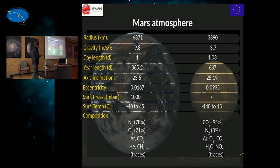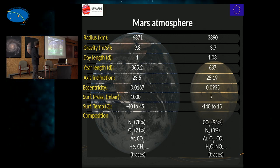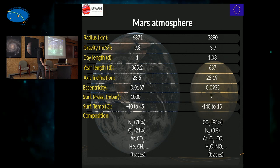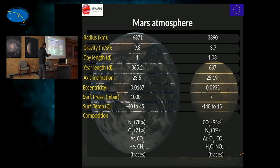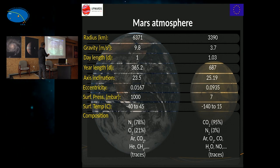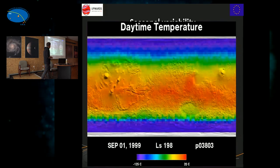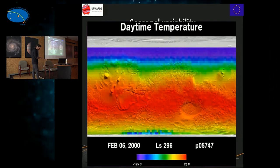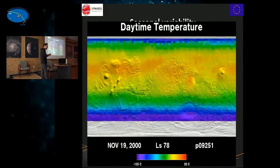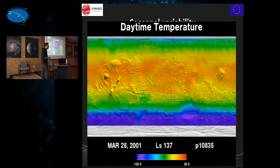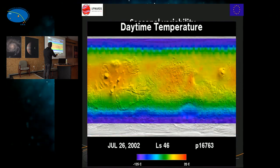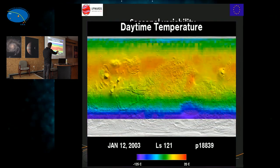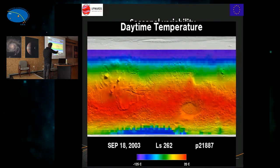Another consequence is that a thin atmosphere has less capacity to redistribute heat, so you have much larger temperature differences on Mars than on Earth. The inclination of the rotation axis of Mars is similar to Earth's, meaning we have seasons on Mars as on Earth. But the difference is that Mars's orbit is much more eccentric, and this imposes an asymmetry in the seasonal cycle.